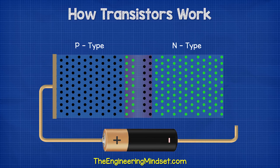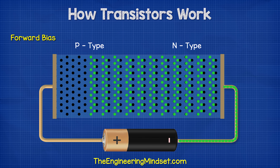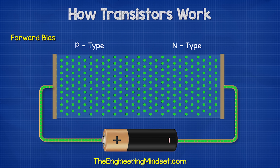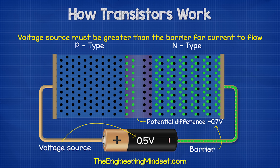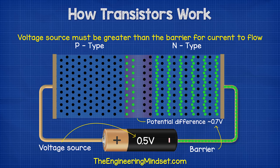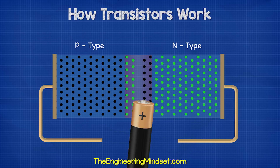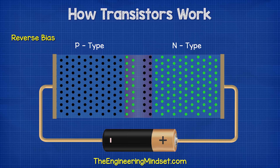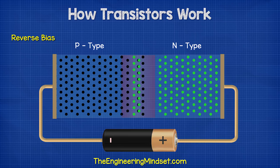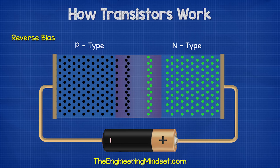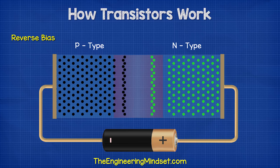When we connect a voltage source across the two ends with the positive connected to the P-type material, this will create a forward bias and the electrons will begin to flow. The voltage source has to be greater than the 0.7 volt barrier, otherwise electrons cannot make the jump. When we reverse the power supply so that the positive is connected to the N-type material, the electrons held in the barrier will be pulled back towards the positive terminal and the holes will be pulled back towards the negative terminal. This has caused a reverse bias.